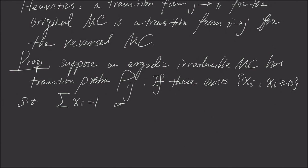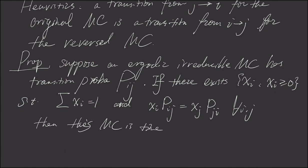And now if it satisfied the equation we just derived, that is x_i times P_ij, is the same as x_j times P_ji for any ij, then this Markov chain is time-reversible.